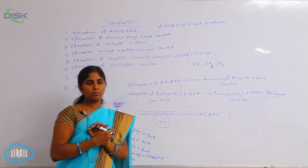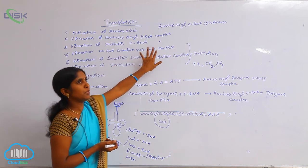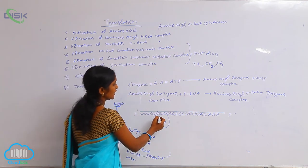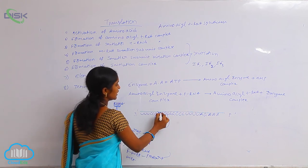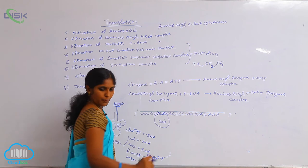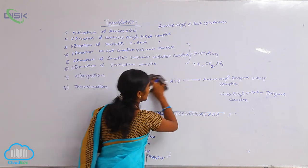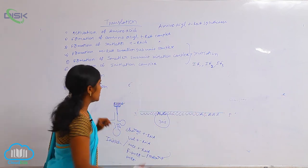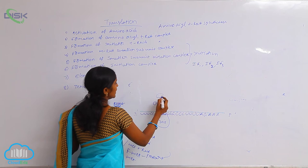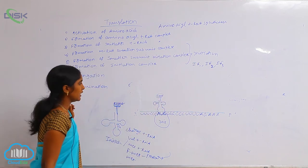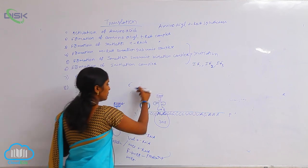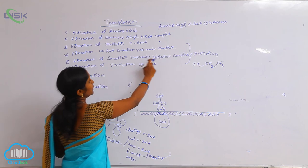Next is the formation of the smaller subunit initiation complex. The already-formed mRNA smaller subunit complex is joined by the initiator tRNA. According to the genetic codon AUG, protein synthesis starts at that position. In prokaryotes the initiator tRNA is F-Met tRNA, with the anticodon UAC. This complete complex — 30S ribosome, mRNA, and initiator tRNA — is called the smaller subunit initiation complex.